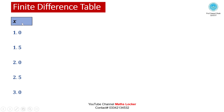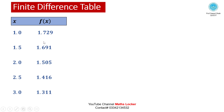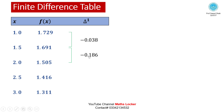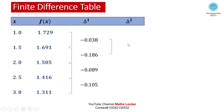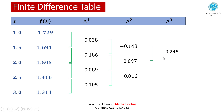Constructing the finite difference table: write x values in the first column, f(x) values in the second column. First differences: 1.691 - 1.729 = -0.038, 1.505 - 1.691 = -0.186, 1.416 - 1.505 = -0.089, 1.311 - 1.416 = -0.105. Then take the second, third, and fourth differences accordingly.